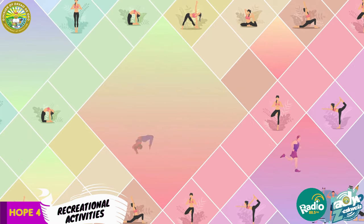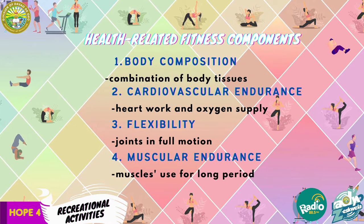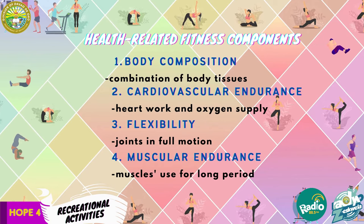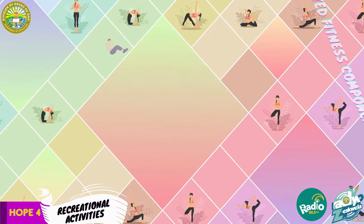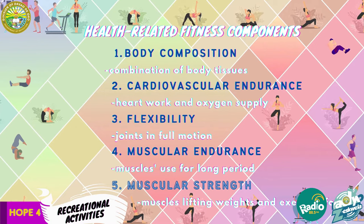Muscular endurance refers to the ability of the muscle to work over an extended period of time without fatigue. Performing push-ups and sit-ups or crunches for one minute is commonly used in fitness testing for muscular endurance. Muscular strength refers to the maximum force a muscle can exert against an opposing force. Fitness testing usually consists of a one-time maximum lift using weights, such as curl, bench press, leg press, and others.